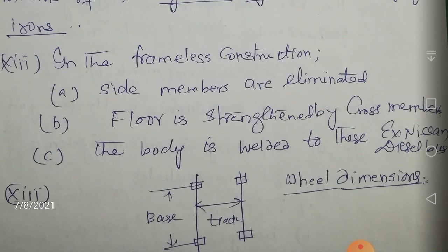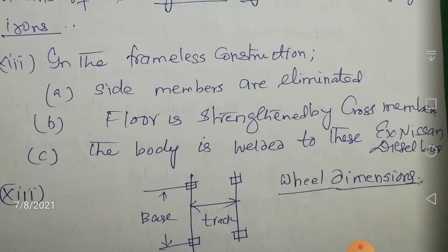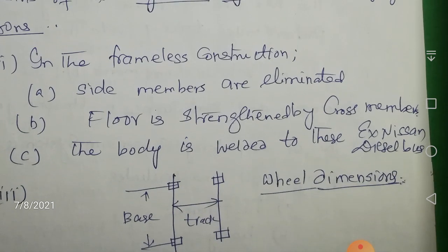In frameless construction, side members are eliminated. The floor is strengthened by cross members, and the body is welded to these cross members. An example of this construction is seen in the Nissan Diesel Bus, where this type of frameless construction is observed.